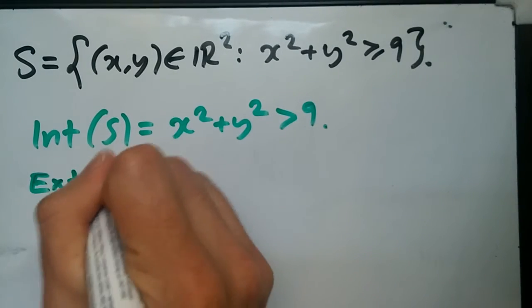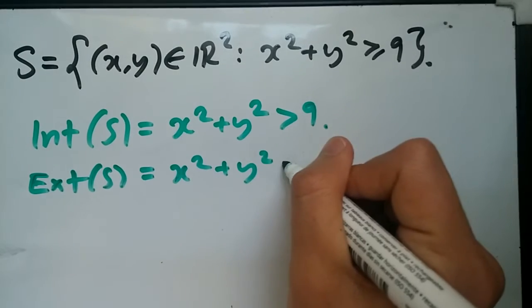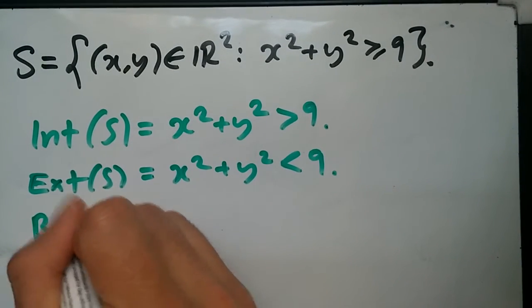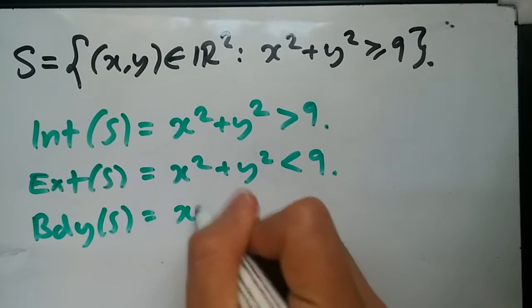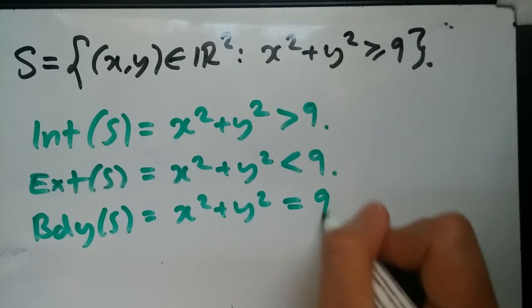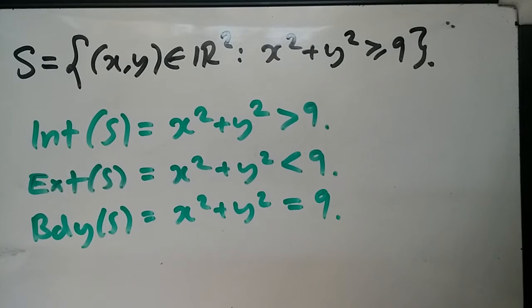Likewise, the exterior would be everything outside it. And outside it implies it's the other side, which is less than 9. And boundary, which we just said, is when it meets the line, so it equals. So yeah, this is really all needed to understand about interior, exterior, and boundary.